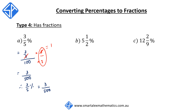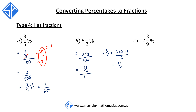Second example: 5½%. We begin by writing this as 5½ out of 100. We convert 5½ into an improper fraction: 5 times 2 plus 1 over 2, which is 11 over 2. So we rewrite this as 11 over 2 out of 100. We multiply top and bottom by 2 — the 2s cancel — giving 11 on top and 100 times 2, which is 200, on the bottom. Therefore, 5½% is the same as 11 out of 200.